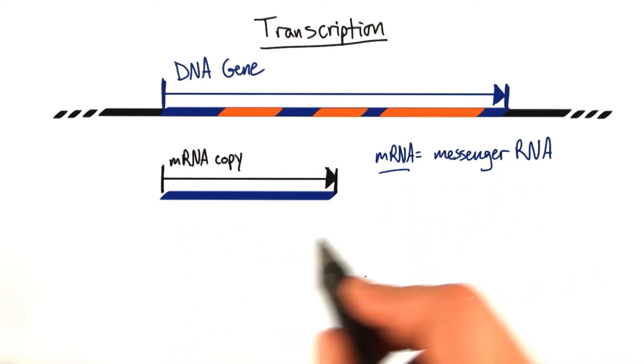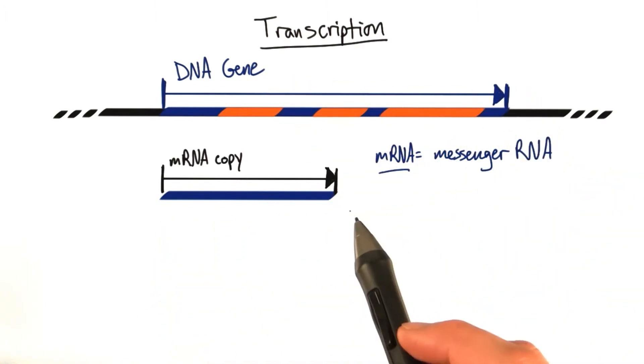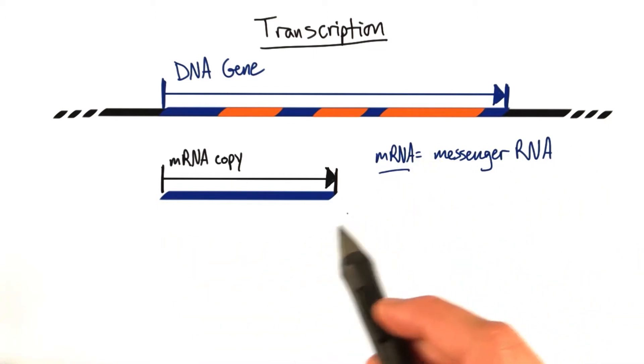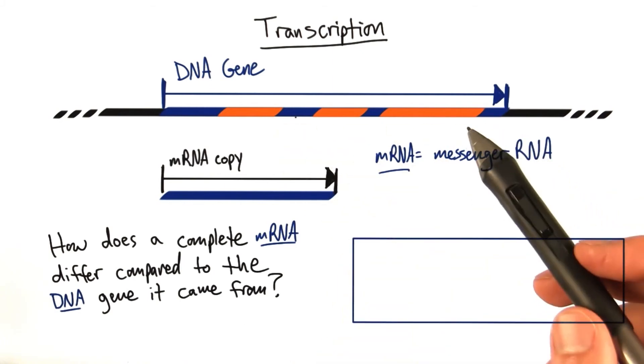Now you might notice a couple of differences from our DNA gene and our mRNA copy. I've drawn these images to be representative of some distinguishing characteristics of the process. So I want you to tell me, how does this mRNA copy differ compared to the DNA gene that it came from?